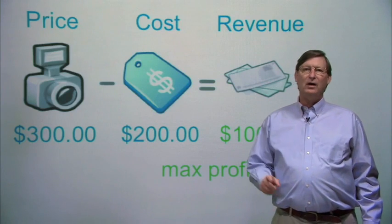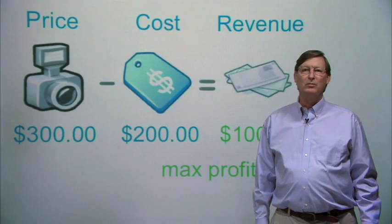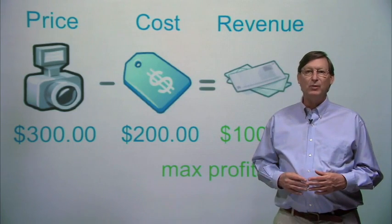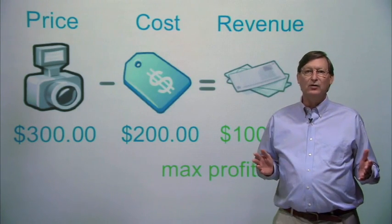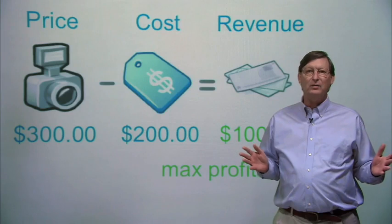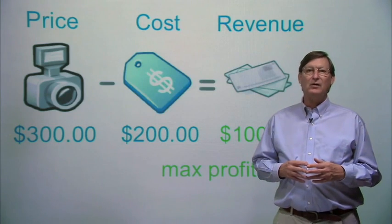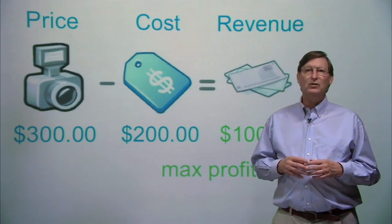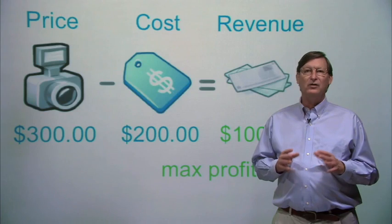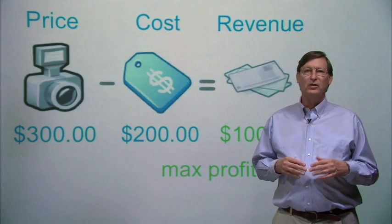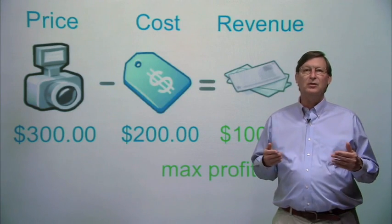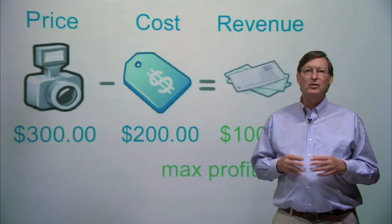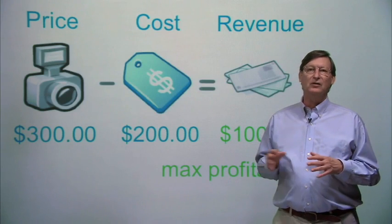When you advertise on Google, you probably have a goal in mind for your advertising. That goal may be the sale of a product, a new lead, a sign-up, or getting a user to view or download some material on your site. Each time a user who clicks on your ad completes one of these goals, they've given you a new conversion. You should be able to attribute a value to each of these conversions.